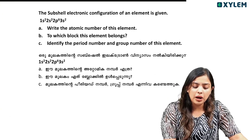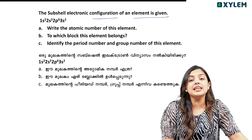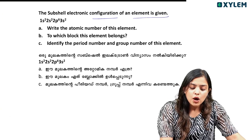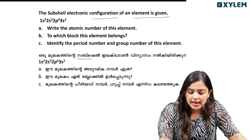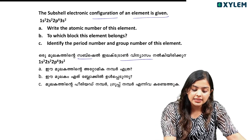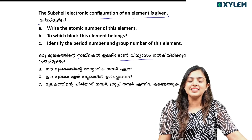Now the next question: the electronic configuration of an element is given. The electronic configuration is 1s², 2s², 2p⁶, 3s².